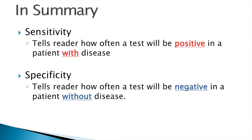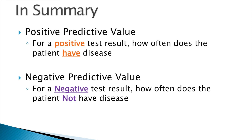To summarise: sensitivity tells the reader how often the test will be positive in a patient with disease. Specificity tells the reader how often a test will be negative in a patient without disease. Positive predictive value tells us that where a positive result is seen, how often does the patient have disease. And negative predictive value tells us that where a negative result is seen, how often does the patient not have disease.